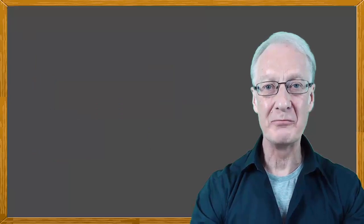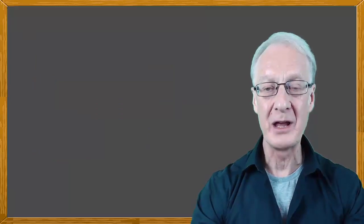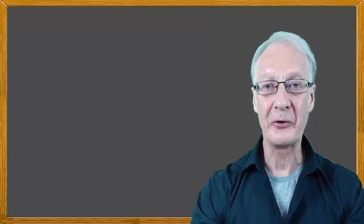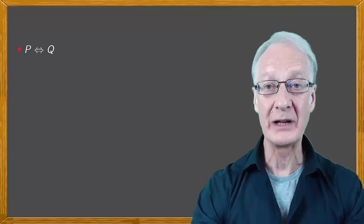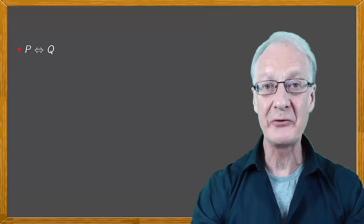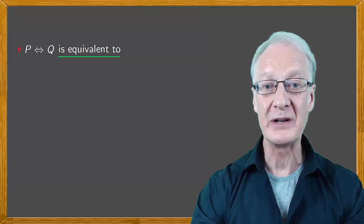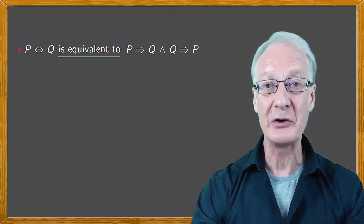So far, we've talked mostly about mathematical results of the form P implies Q. There are also results of the form P if and only if Q, which means that P and Q are equivalent. In this case, to prove P if and only if Q is equivalent to demonstrating that both P implies Q and that Q implies P.